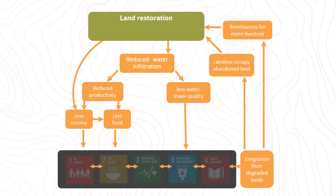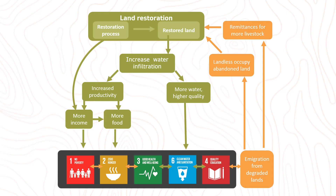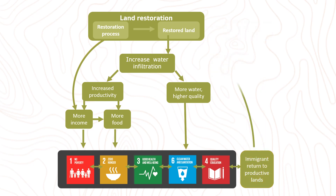For example, it can increase water infiltration into the soil, which can then increase land productivity and create more income and food. This can reduce poverty, hunger, and improve health and opportunities for education. More and better quality of water can also be accessed. With all these, people who are forced to migrate may be able to come back to the productive land.